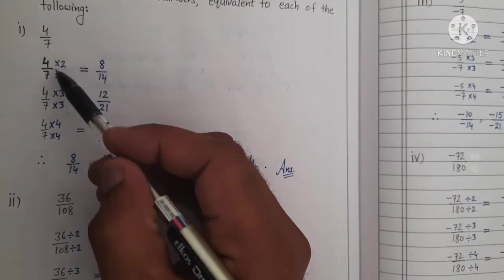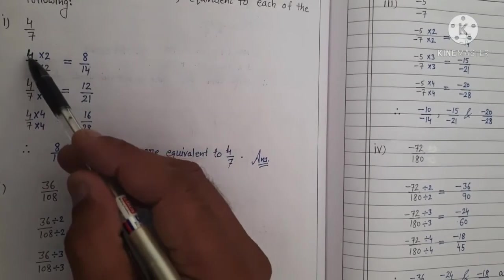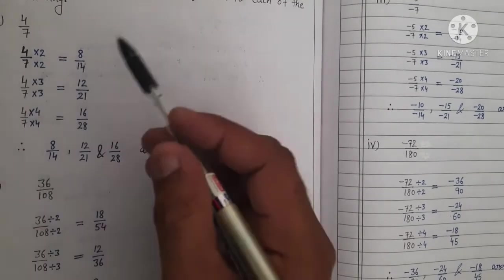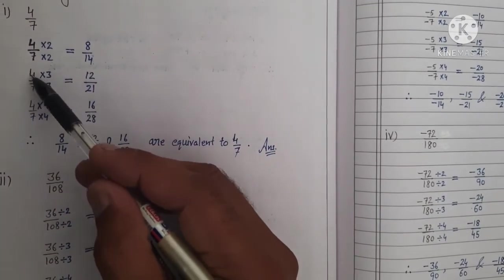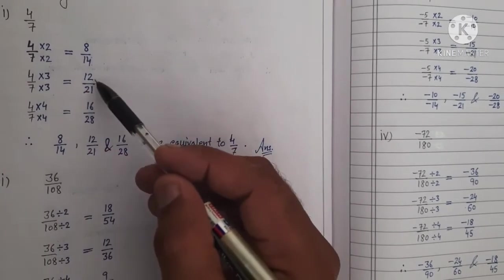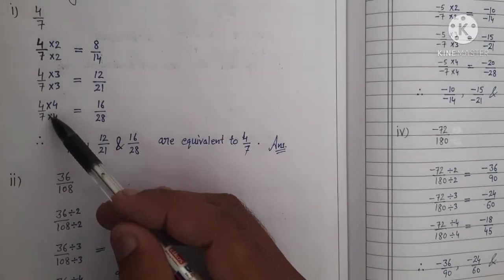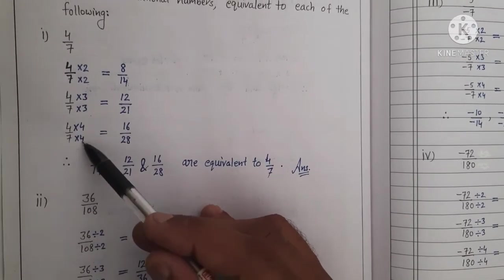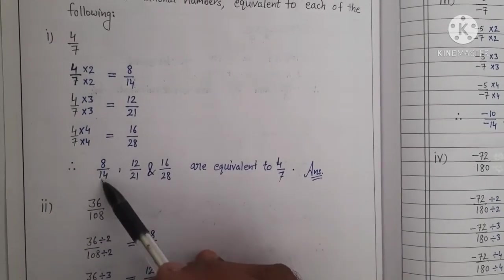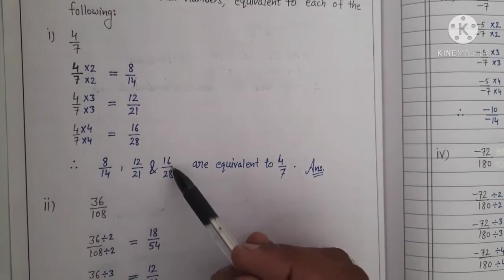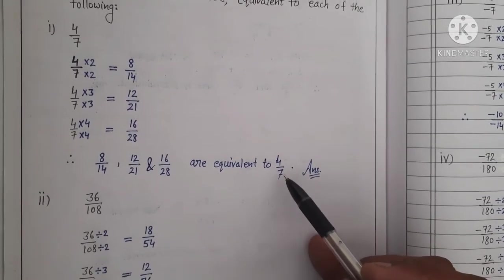Let us start part first: 4 upon 7. 4 upon 7 ke liye humein 3 equivalent rational numbers find karne hain. First ke liye hum 2 se numerator aur denominator ko multiply karenge — first equivalent rational number ban jaayega 8 upon 14. Second ke liye 3 se multiply karenge — answer ban jaayega 12 upon 21. Third ke liye 4 se multiply karenge — answer ban jaayega 16 upon 28. Therefore, 8 upon 14, 12 upon 21, and 16 upon 28 are equivalent to 4 upon 7. That is our required answer.